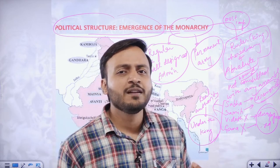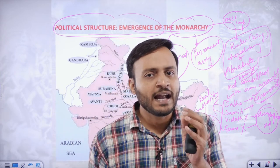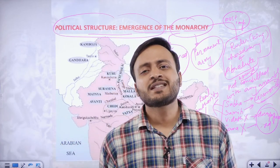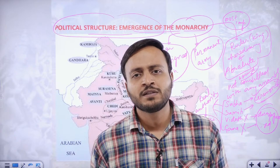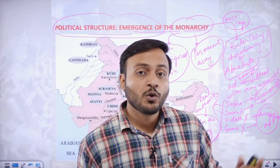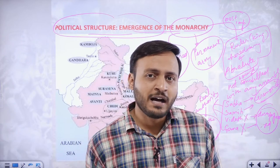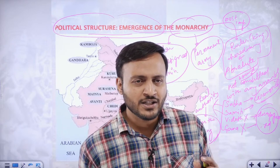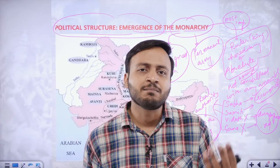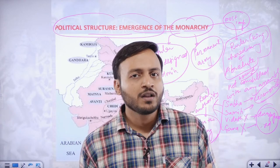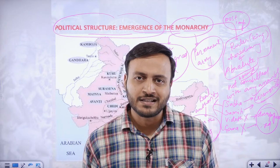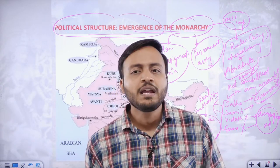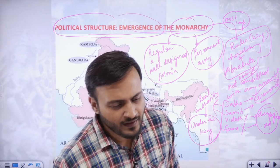Sabha was now only the group of the closest members in the family, and Samithi consisted only of selected few people — near and dear ones of the king. Whereas in the Rig Vedic period, Sabha consisted of the kith and kin of the ruler, and Samithi was the general assembly of all adult people of the tribe — both men and women were allowed. But in the later Vedic period, women were not allowed in Sabha.